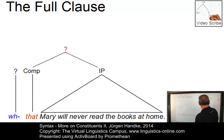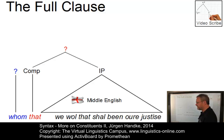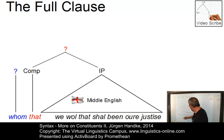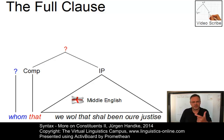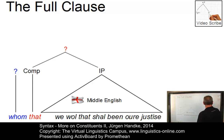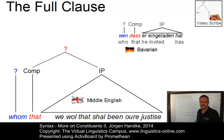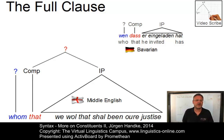Take for example this Middle English sentence taken from Geoffrey Chaucer's Canterbury Tales, where the complementizer that is preceded by whom: Whom that we will that shall be in our justice. So here we have two such elements at the beginning of a sentence. Or look at some German dialects like Bavarian German, where you have constructions such as wen das er eingeladen hat — literal translation: who that he invited has. Again, two such elements at the beginning of a clause.